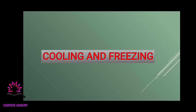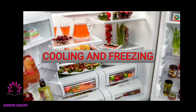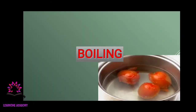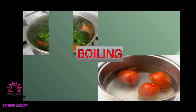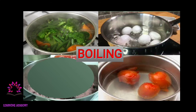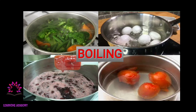The next method is cooling or freezing. We especially store fish and meat in the deep freezer. Vegetables, milk, and other milk products are preserved by the method of cooling. The next method is boiling — food is preserved at home by boiling. In markets, food items are purified and preserved by different methods and then sold. Examples include cold drinks, bread, fruits, juices, and jam.